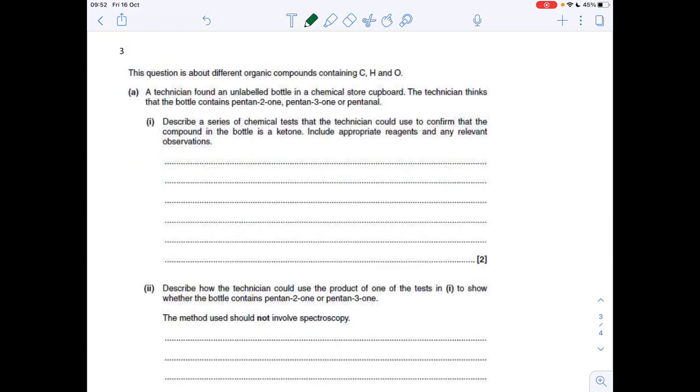Next question is about a technician who finds an unlabeled bottle in the chemical store. They think it's either pentin-2-one, three-one, or pentin-al. Describe a series of chemical tests the technician could use to confirm that it's a ketone. Include appropriate reagents and any relevant observations. So the first thing they've got to do is prove that it's a carbonyl, first of all. So they're going to add 2,4-DNP, or you could say Brady's reagent.